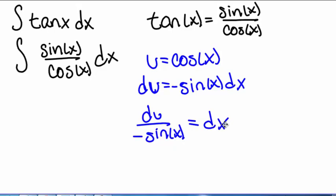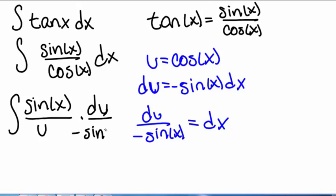Then, when we plug this in, we get the integral of sine of x over u times du over negative sine of x. Our sine of x is cancelled. Then we're left with the integral of negative 1 over u du.